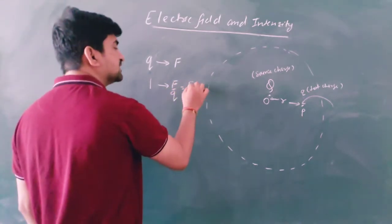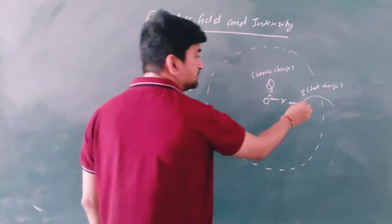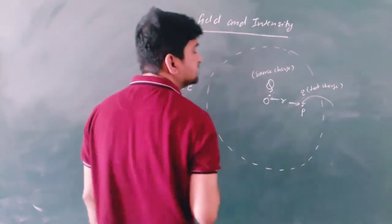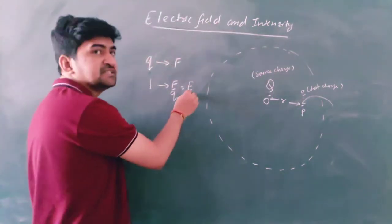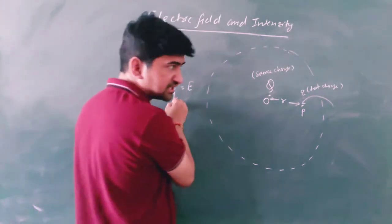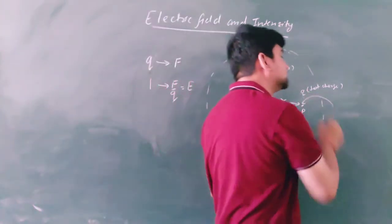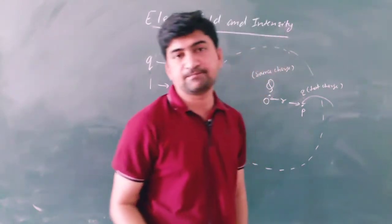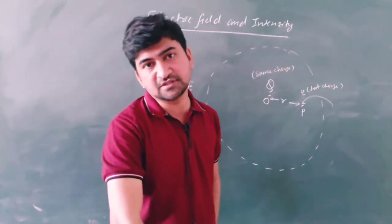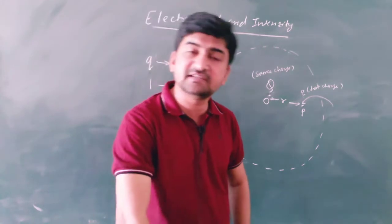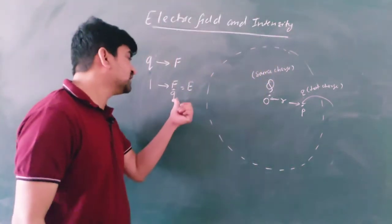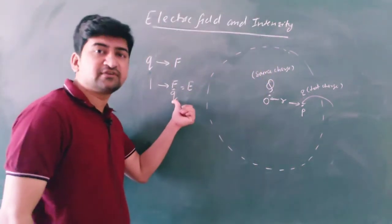And this F by Q is the measure of electric field intensity at point P. So what is electric field intensity? Electric field intensity is the force experienced by a unit positive test charge. The positive test charge also gives the direction of electrical intensity.